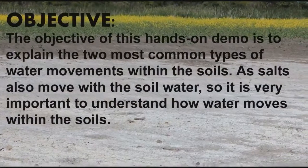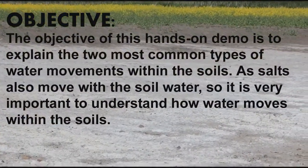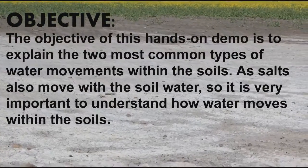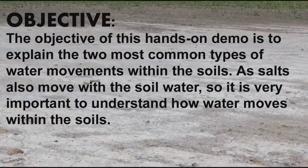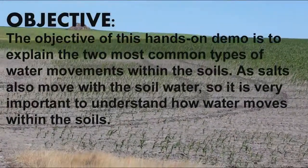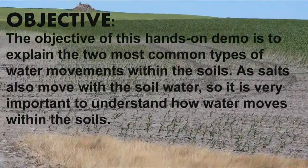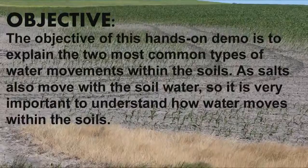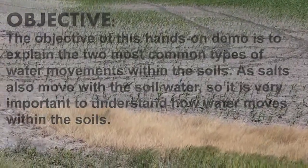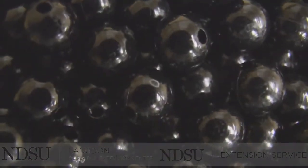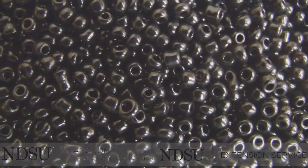The objective of this hands-on demo is to explain the two most common types of water movements within the soils. As salts also move with the soil water, it is very important to understand how water moves within the soils. Both of these water movements are affected by different soil types and the size of the soil pores, which play an important role in determining the speed and direction of the soil water. Sand has the largest size soil particles and pores, whereas clay has the smallest size for soil particles and pores.